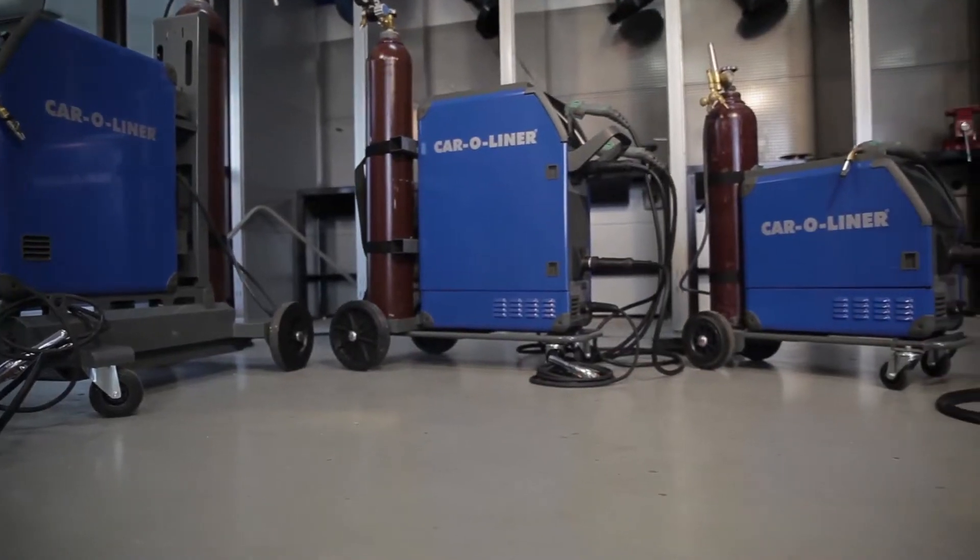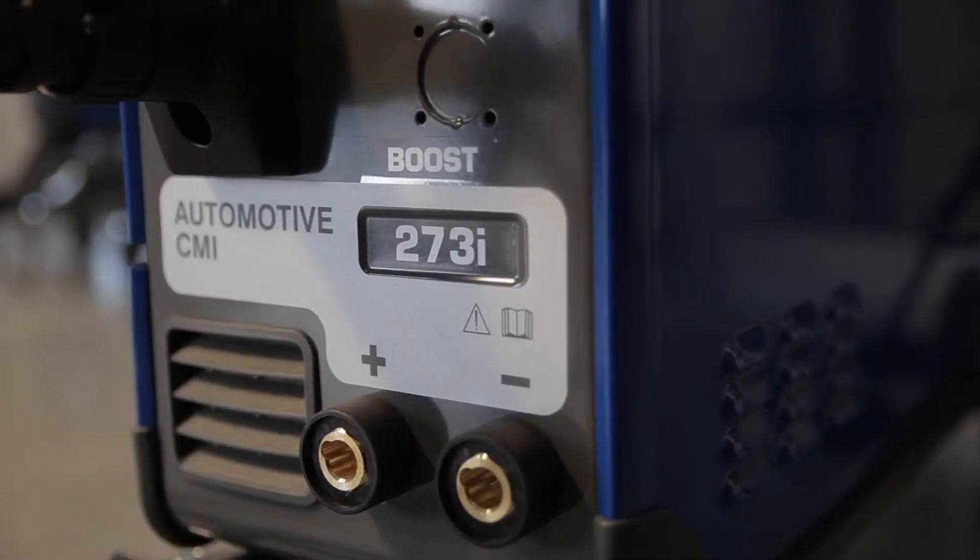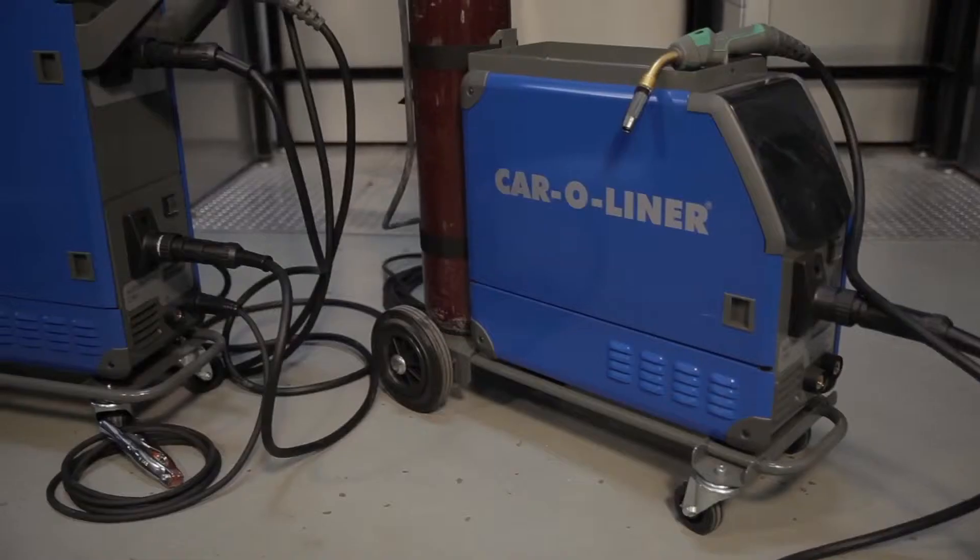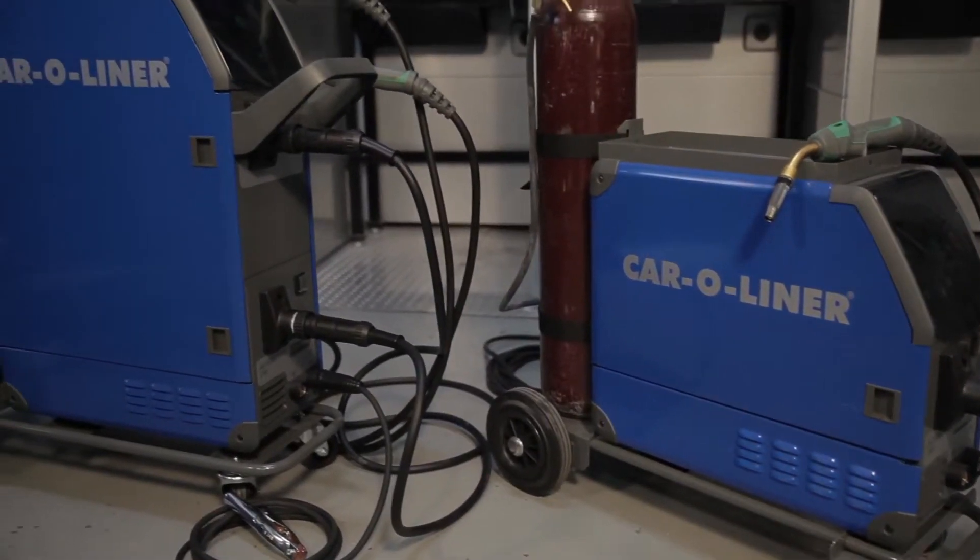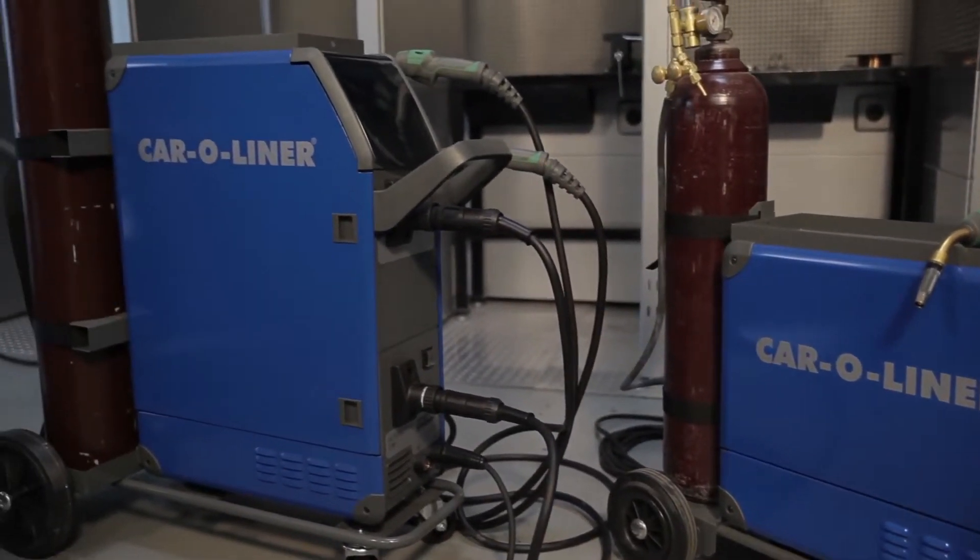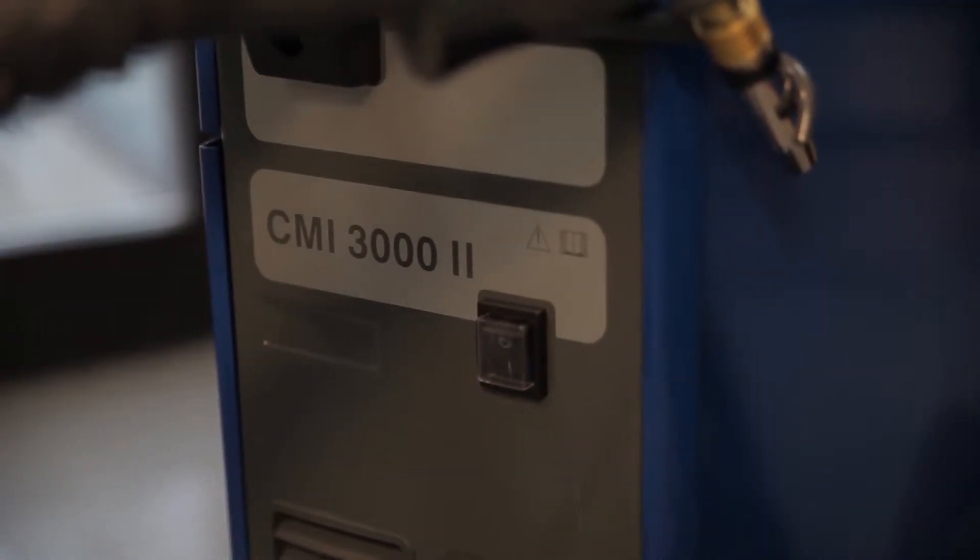We have two different models in our lineup here. These are our CMI 273i welders. We have two varieties: a single wire feed and a two wire feed. And then over here we have our CMI 3000.